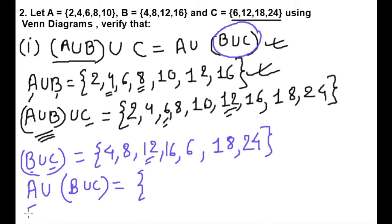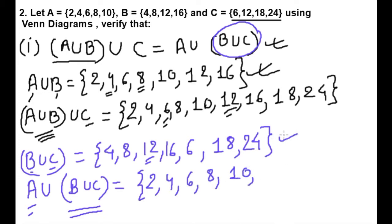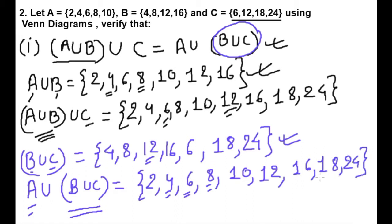Now A∪(B∪C) means we have to write all elements of A and B∪C one time without any repetition. Elements of A are 2,4,6,8,10. From B∪C: 4, 6, and 8 are already available; so we add 12, 16, 18, and 24. Therefore A∪(B∪C) = {2,4,6,8,10,12,16,18,24}.